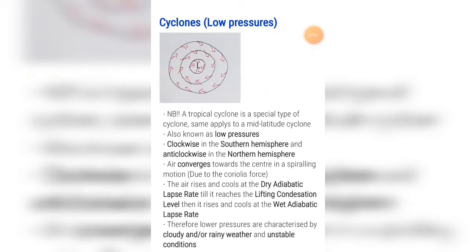Air inside the cell rises and cools at the dry adiabatic lapse rate until it reaches the lifting condensation level, then it rises and cools at the wet adiabatic lapse rate. Therefore, low pressure cells or cyclones are characterised by cloudy and rainy weather and unstable conditions.